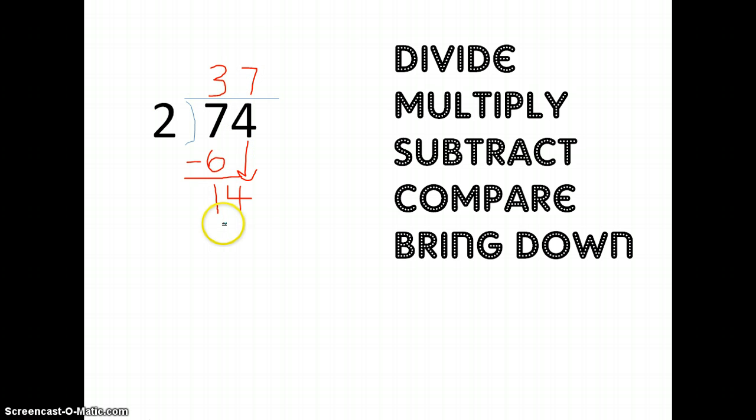So multiply. 7 times 2 equals 14. Subtract. I end up with 0. 14 minus 14 is 0. Compare. 0 is smaller than 2. And there's nothing left to bring down. And I have no remainder. So my answer is 37.